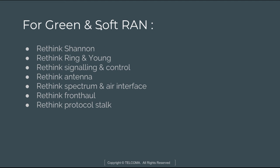So these are the seven parameters required to make a green and soft radio access network: Shannon, Ring and Young, signaling and control, antenna, spectrum and air interface, fronthaul, and protocol stack. In order to make a green, soft, and super fast 5G network, we have to rethink these seven parameters. Thank you so much.